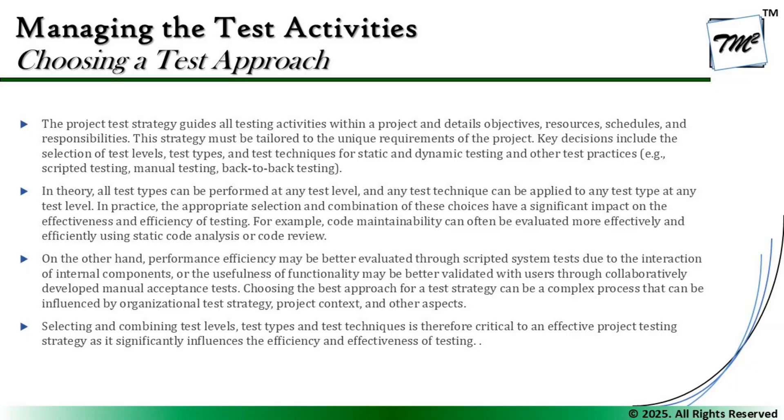When we say the test strategy defines the overall approach to testing, theoretically — as we covered in foundation — there are no restrictions on which test level can be applied at what point, or which technique can be applied to which test level. White box or black box can be performed at any level; functional and non-functional are not restricted to any particular level. For example, a performance test engineer can join at the unit testing level and perform performance checks on the code, while the functional testing team handles functional checks. The levels, techniques, and types are not restricted to each other.